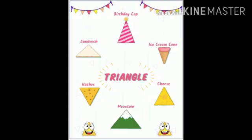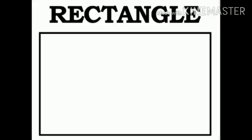This is a triangle. Let us now see the various objects that are triangle in shape. Birthday cap, ice cream, corn, cheese, mountain, nachos, sandwich are triangle in shape. This is a rectangle.